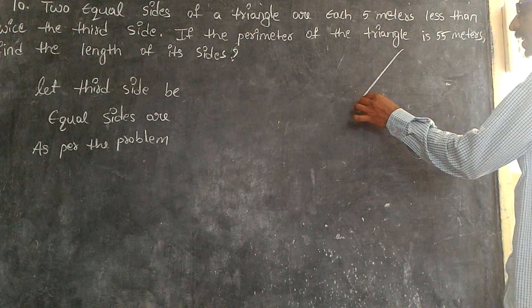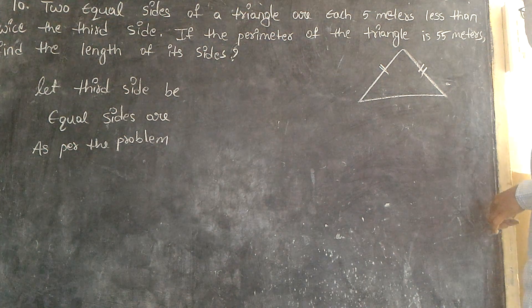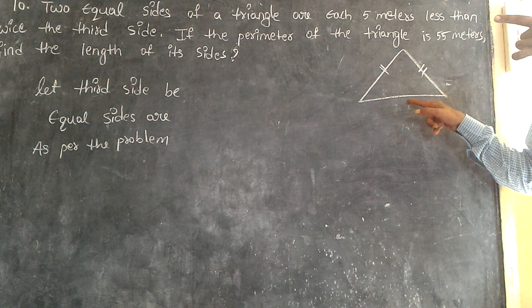Suppose this is my triangle and these two sides are equal. This is my third side. We concentrate: two equal sides of a triangle.